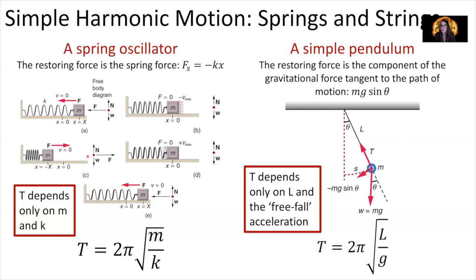The period of oscillation for a spring oscillator is 2π times the square root of the mass divided by the spring constant in Newtons per meter. The frequency would just be the inverse of this relationship.